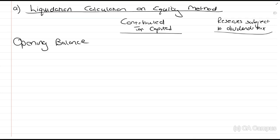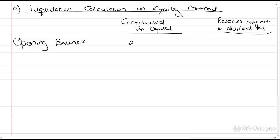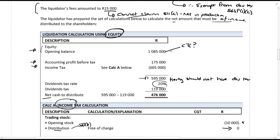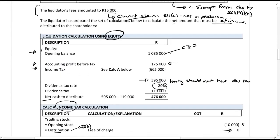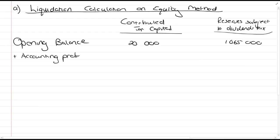We're going to have our liquidation calculation on the equity method. Remember what we're going to try and calculate is we're going to try and calculate a closing balance. So, what we do is we create two columns. The one is a column for contributed tax capital and the other one is for reserves subject to dividends tax. That's usually just your retained earnings. That's the most common one. But any other reserve which is also not contributed tax capital should be considered there.